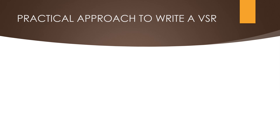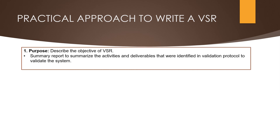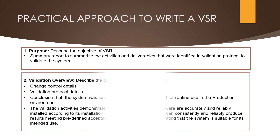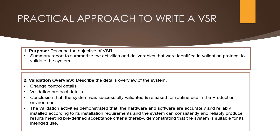Now we will discuss the practical approach to write a validation summary report. The first component is the purpose section, which defines the objectives of the overall validation approach. In the purpose section, we need to define the objective such as: this validation summary report is to summarize the activities and deliverables that were identified in the validation protocol to validate the system.